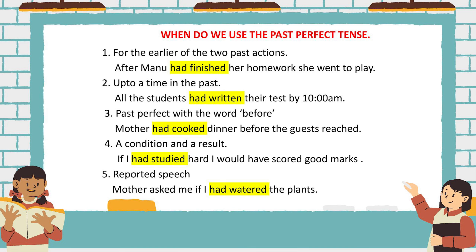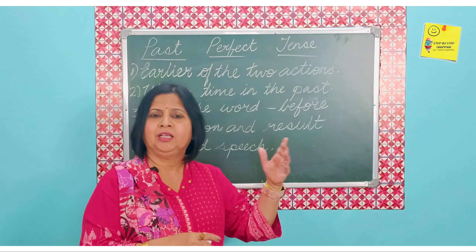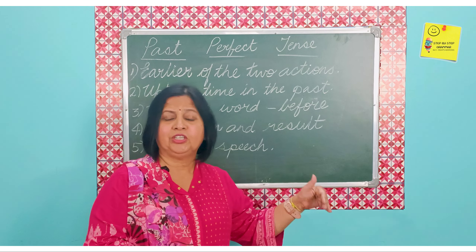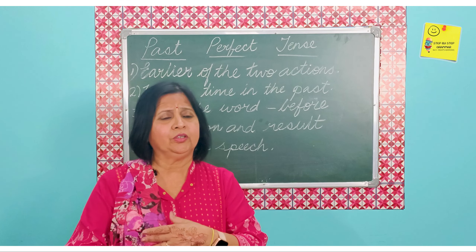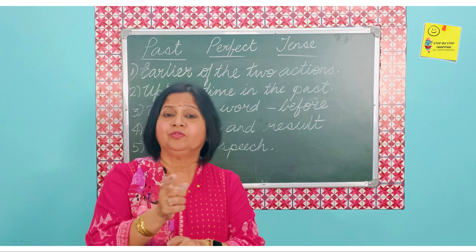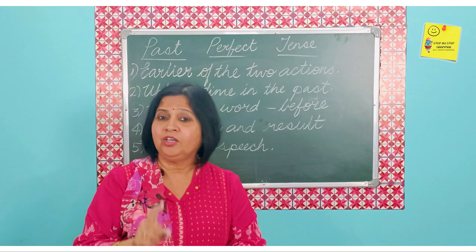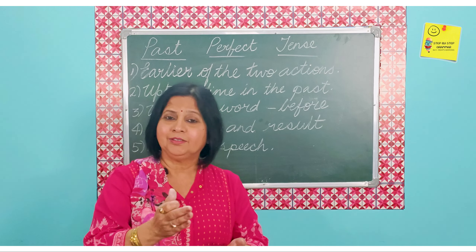Then, up to a time in the past: 'all the students had written their test by 10am.' A time was specified — it could be yesterday, morning, last week, anything. They had finished their work by 10am. We also use the past perfect with the word 'before': 'mother had cooked the dinner before the guests reached,' or 'before the guests arrived, mother had cooked dinner.'